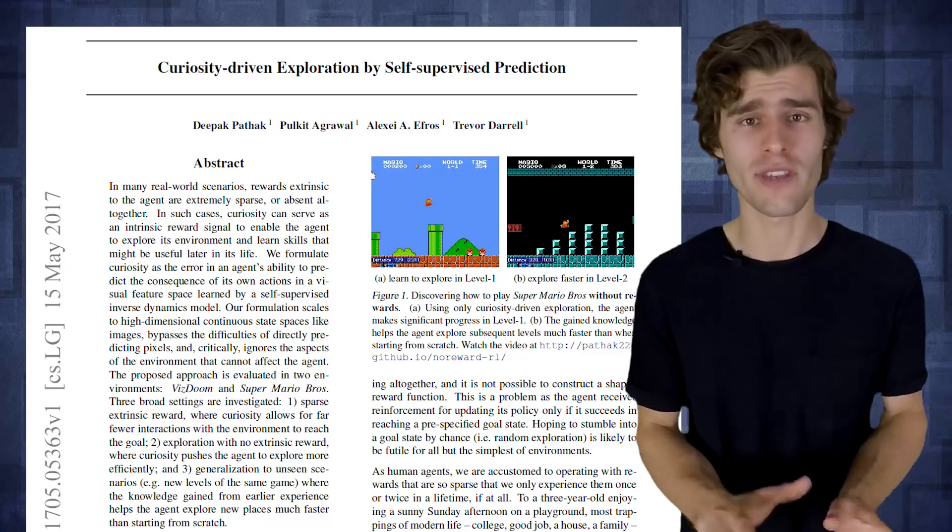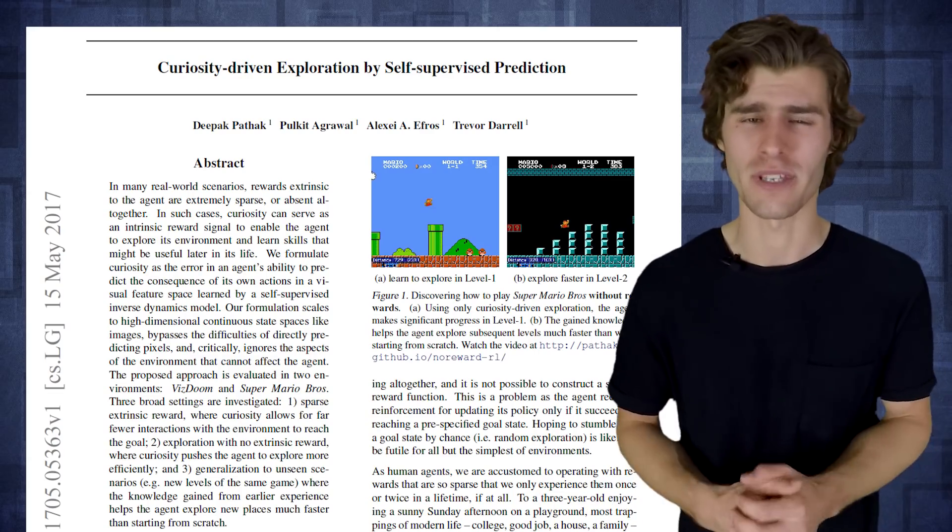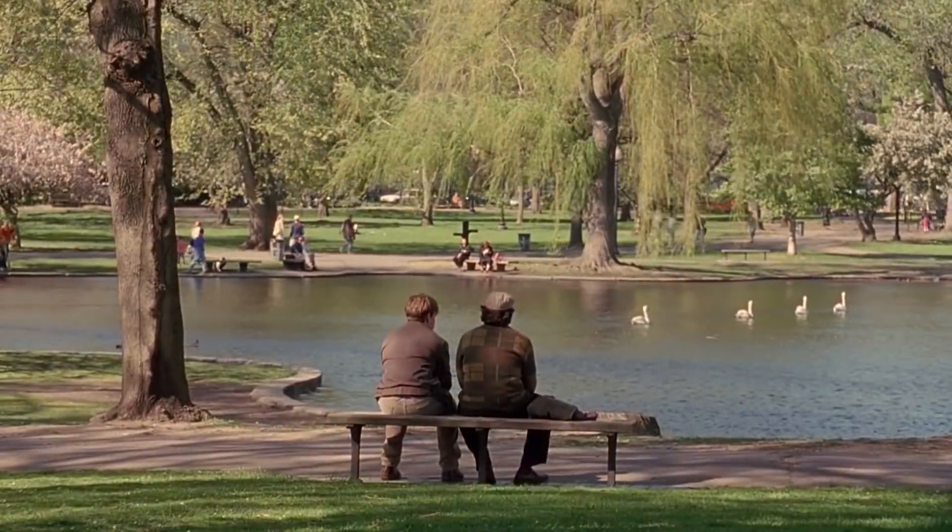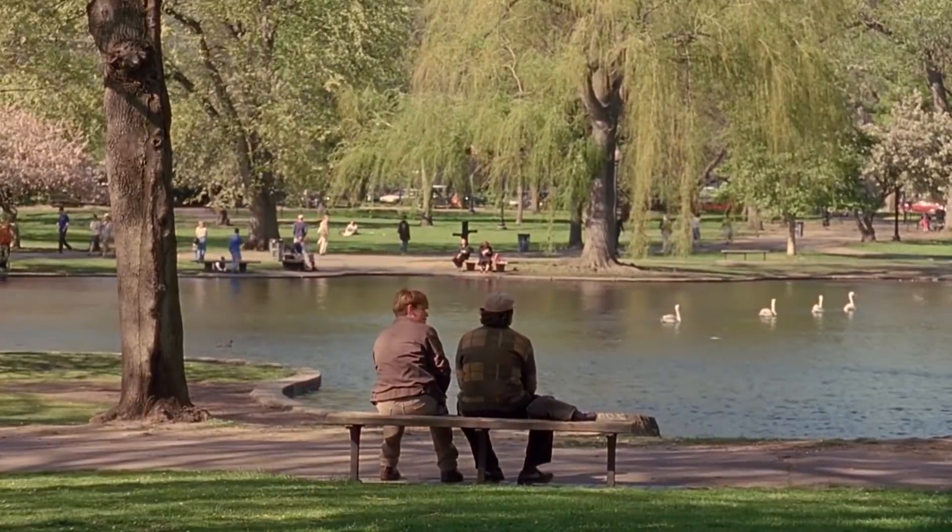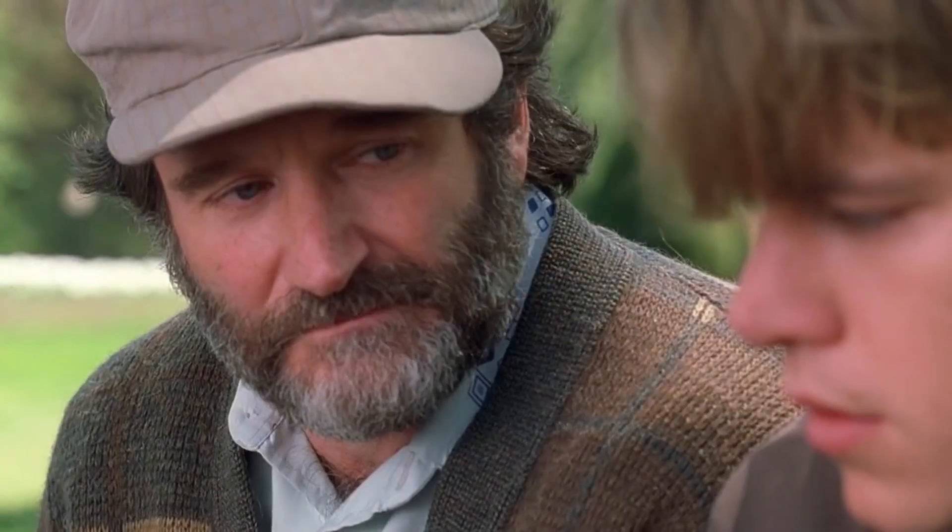And so one particular paper that I want to highlight here uses what the authors introduce as an intrinsic curiosity module. And it uses a very good example to show what this all means. So imagine a scenario where an agent is observing the movement of tree leaves in a breeze. Now, since it's really hard to exactly model the breeze, predicting pixel changes for each leaf is going to be virtually impossible. And this means that the prediction error in pixel space will always remain high and the agent will be forever curious about the leaves.